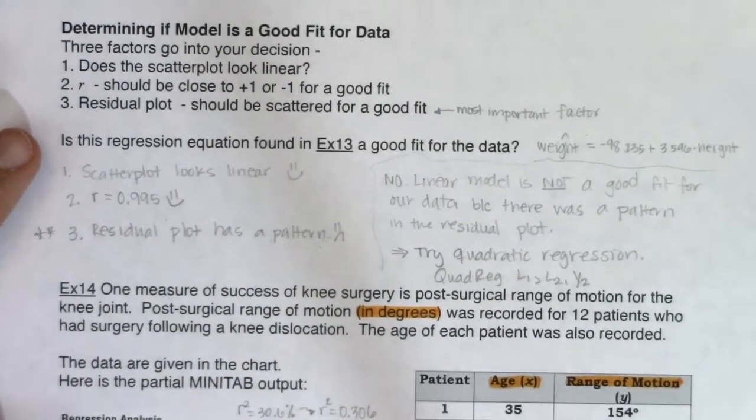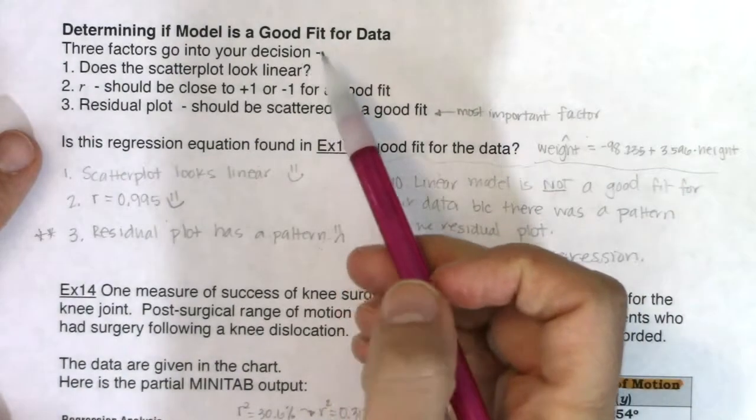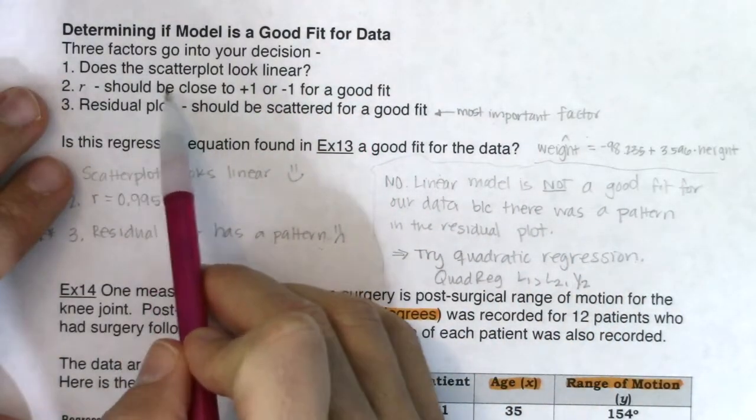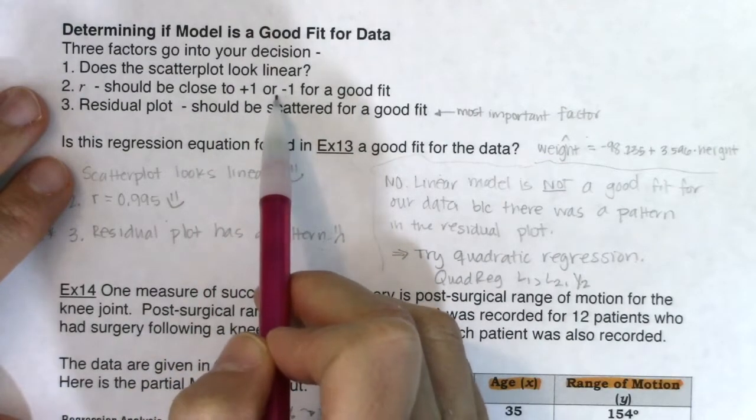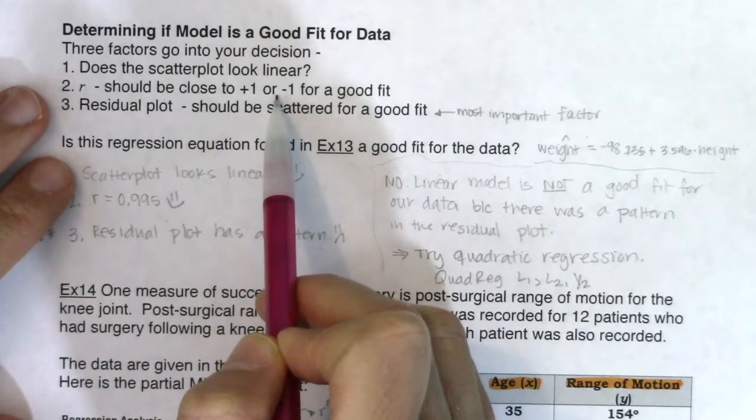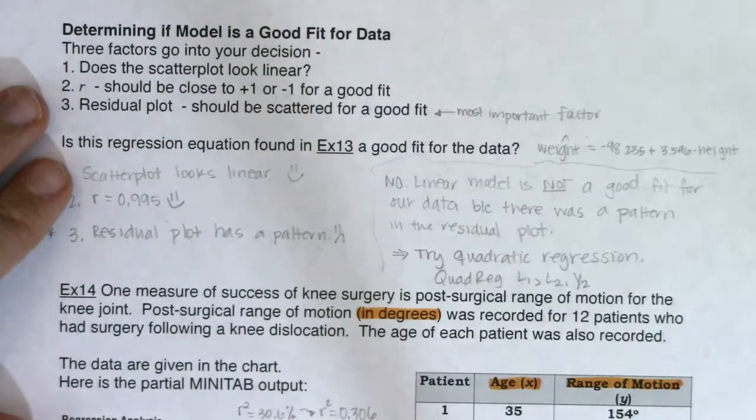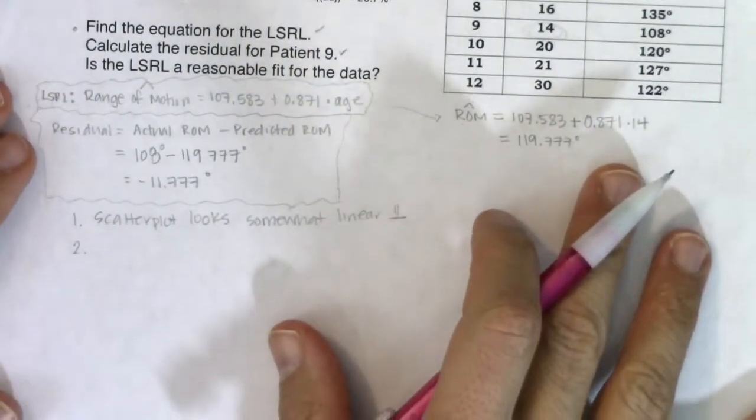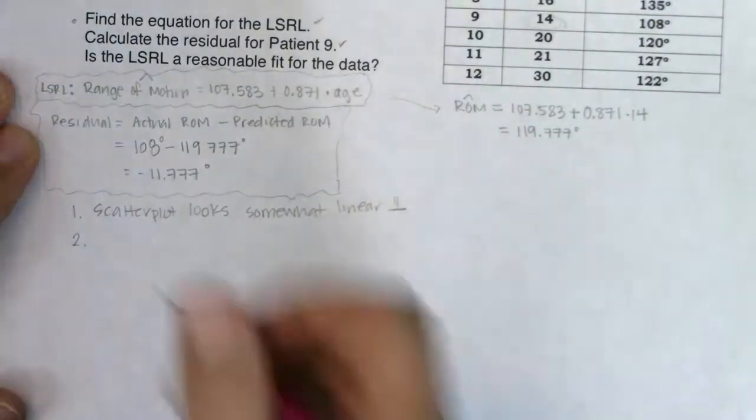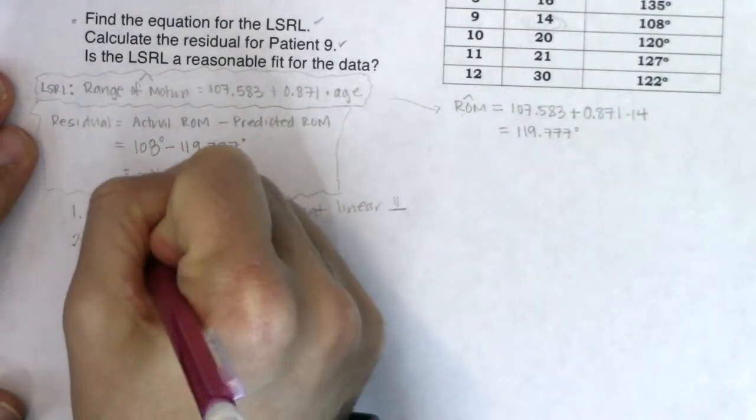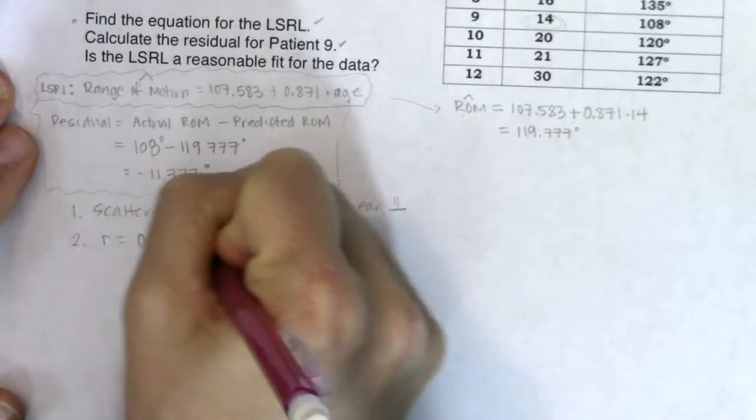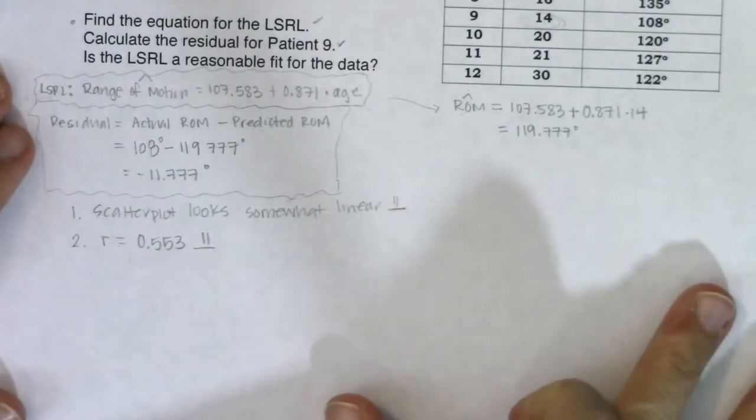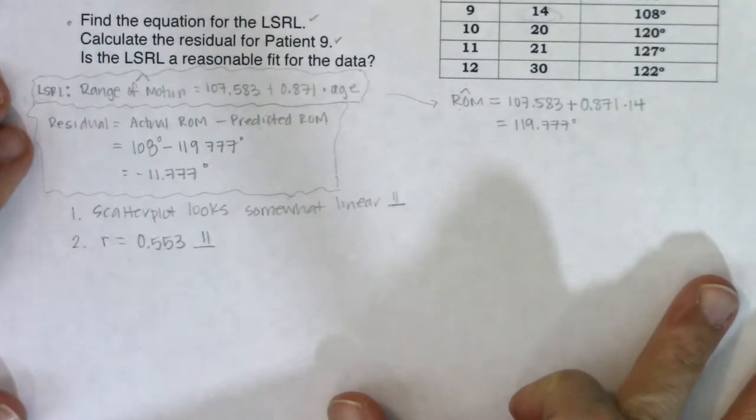So here we go. R is 0.553. So if we go back to the original question trying to figure out is my model a good fit, we said the scatter plot looked meh. R should be close to one or negative one. It's not. It's 0.553, but it's also not zero. So again I'm going to give myself a medium face. So R was 0.553, so I'm going to give myself the medium face. It's not happy, it's not sad. It's in the middle somewhere.